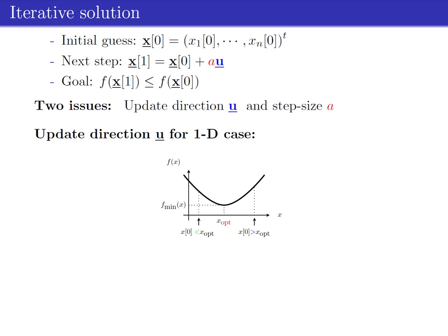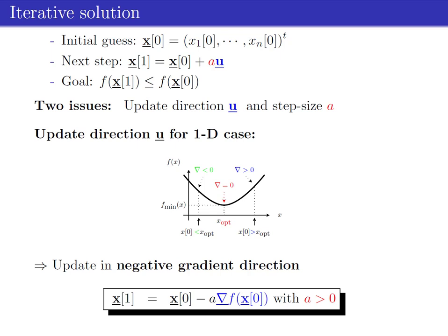The initial guess x can be larger or smaller than the optimal value x-star. Intuitively, the gradient evaluated at the initial guess x gives the slope of the function f at x, and its direction points toward an increase in the function. Thus, to lower the function value, we change the initial guess x in the opposite direction of the gradient, which results in the multivariable update equation. The main steps of the proof of this equation can be found in the appendix of the slides.